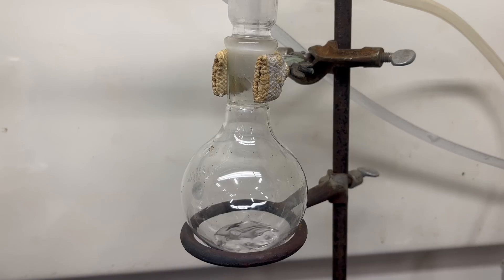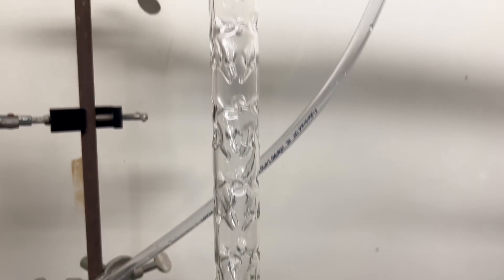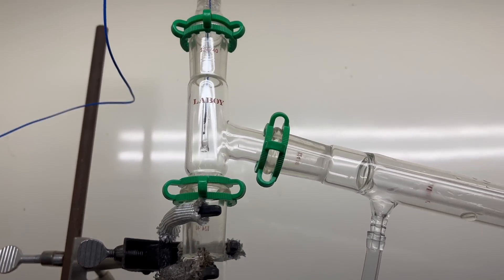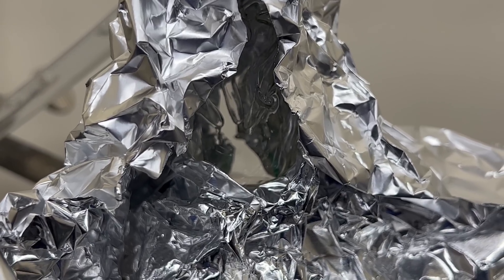The fractional distillation setup is quite similar to a regular distillation. The only difference is the inclusion of a fractional column. This allows a place for the vapor to condense, leading to better separation of the mixture.